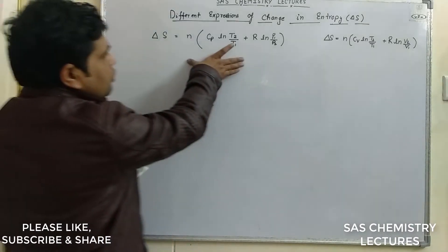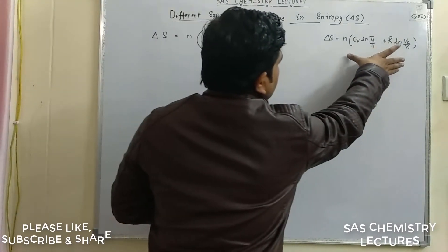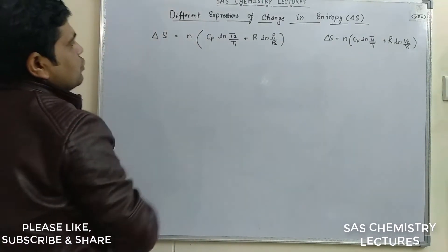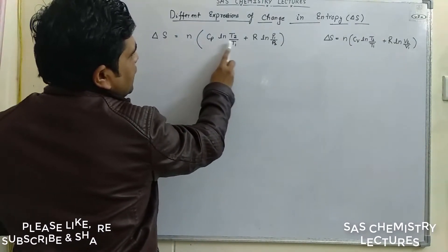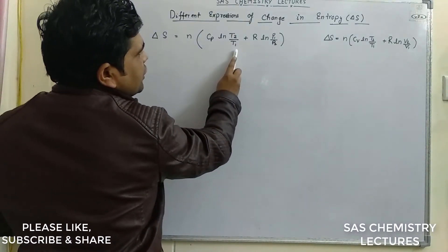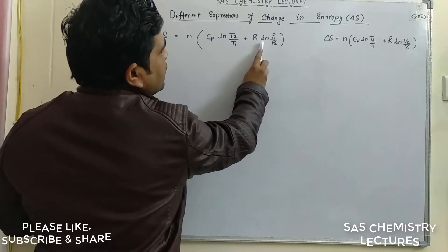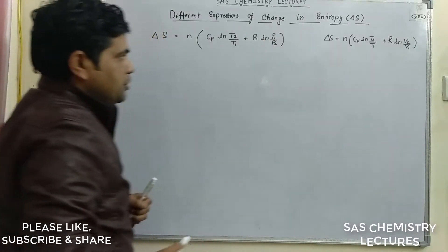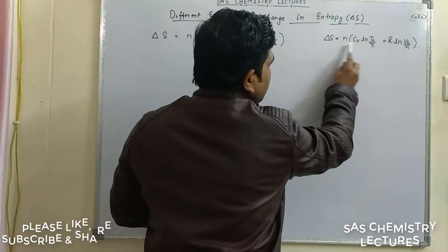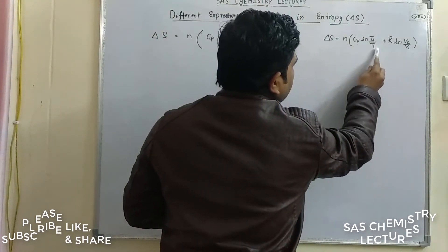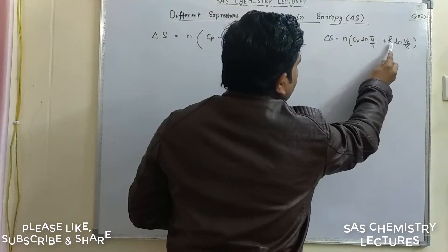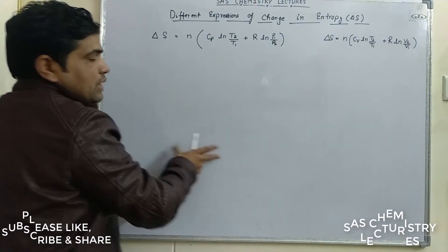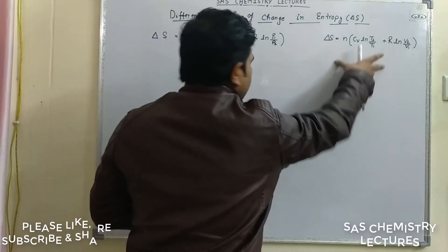Here we have two formulas. The first is: ΔS = N·Cp·ln(T2/T1) + N·R·ln(P1/P2). The second is: ΔS = N·Cv·ln(T2/T1) + R·ln(V2/V1). We will solve the first one and then the second one.